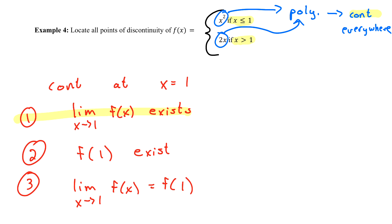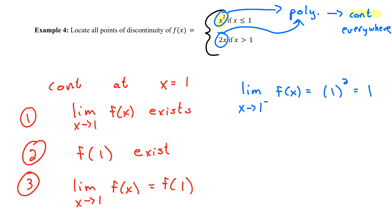The first thing I'm going to look at is whether the limit exists. This is tricky because we're working with a piecewise function defined differently on either side of 1. So I'll break it into one-sided limits. The limit as x approaches 1 from the left: since we're talking about values less than or equal to 1, I plug into x squared — 1 squared equals 1. So the left-hand limit is 1.